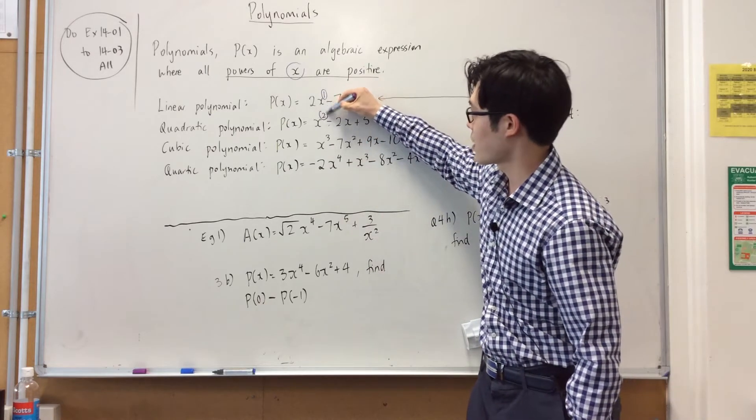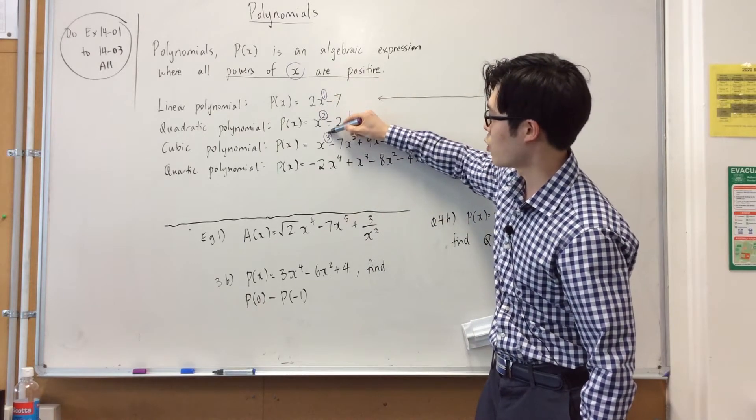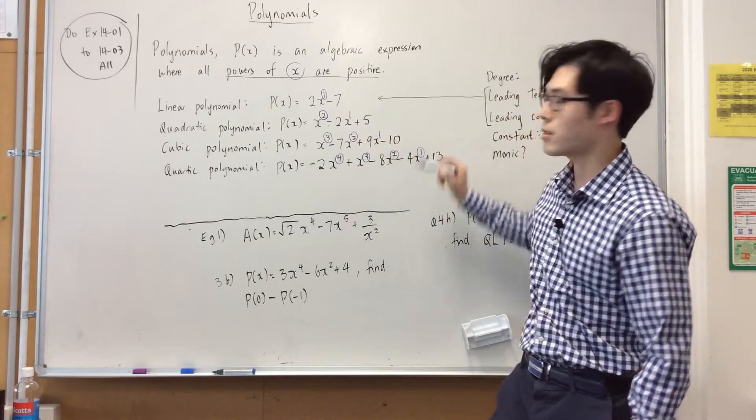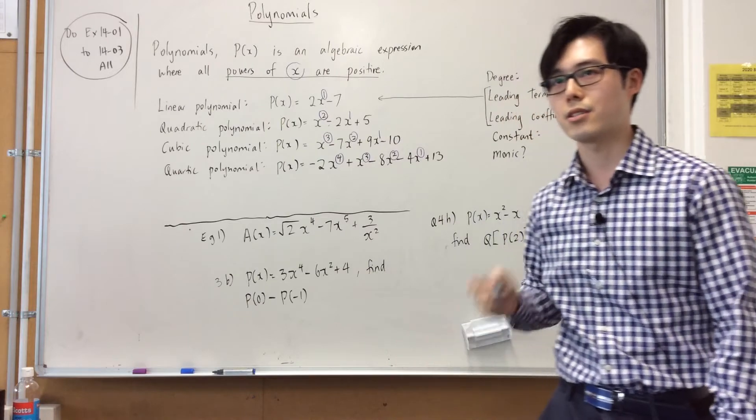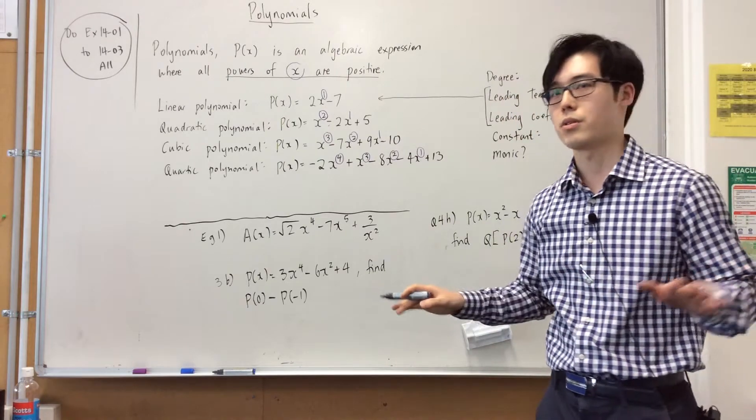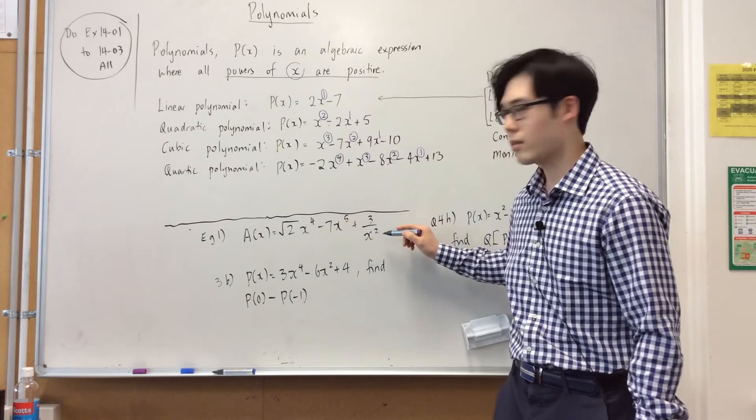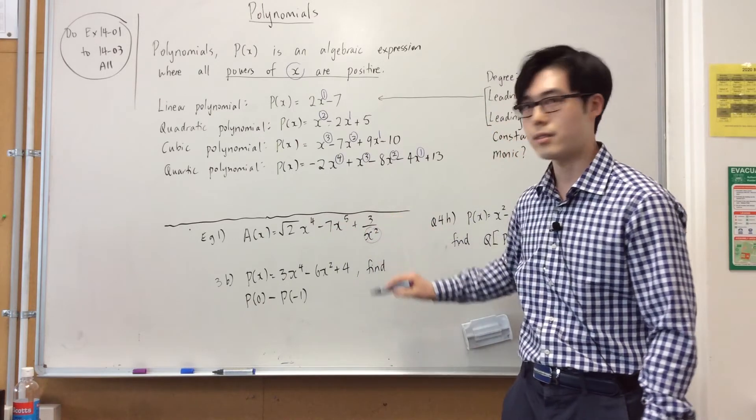Notice how that's positive. This is positive. They're all positive powers. So as soon as you see a power of x that's not positive, it's not a polynomial. So for example in this question, in this polynomial, this is not a polynomial because what's the power of x there?